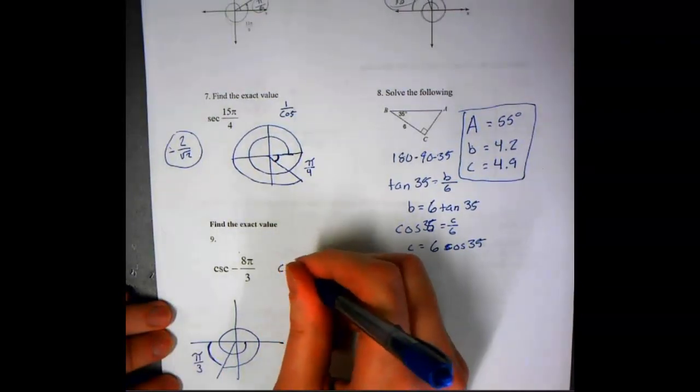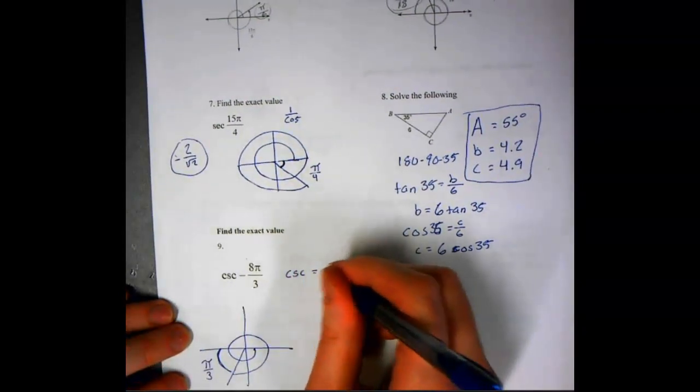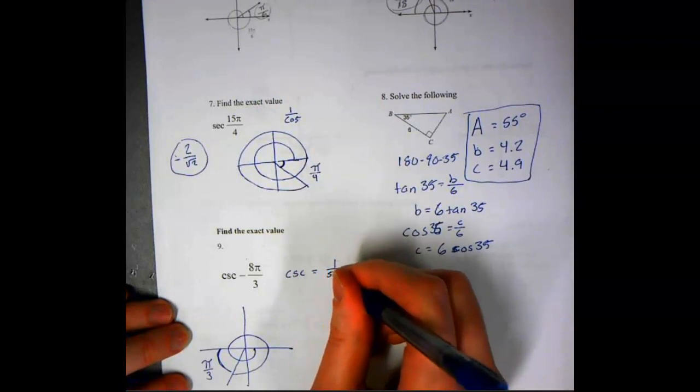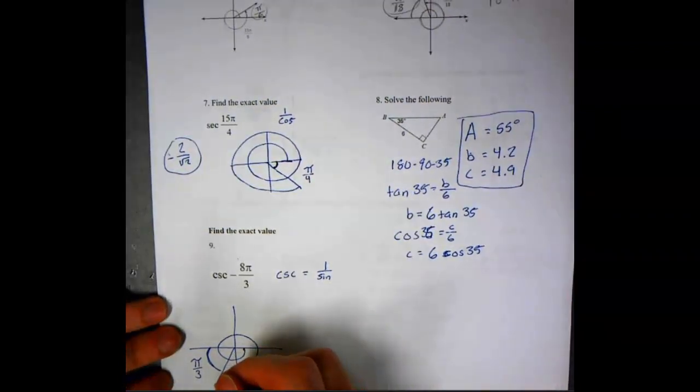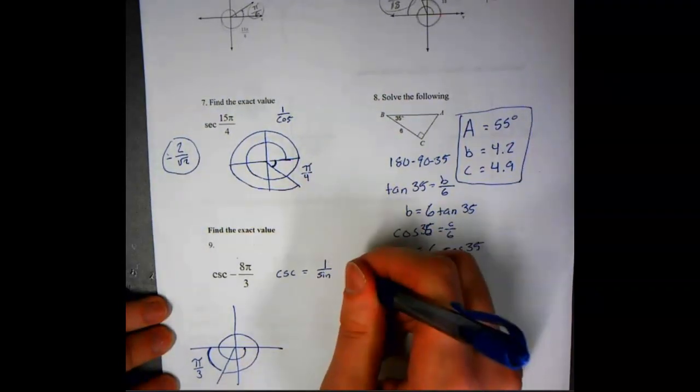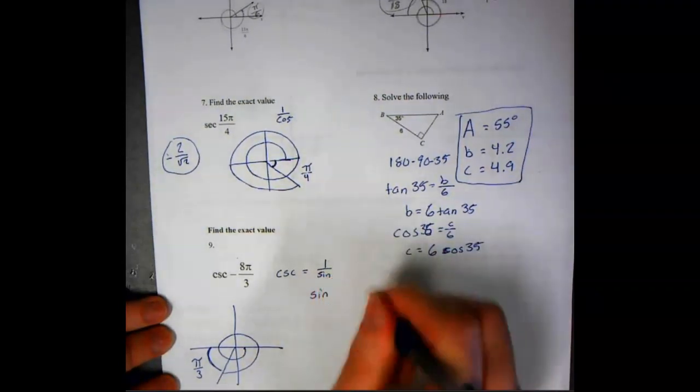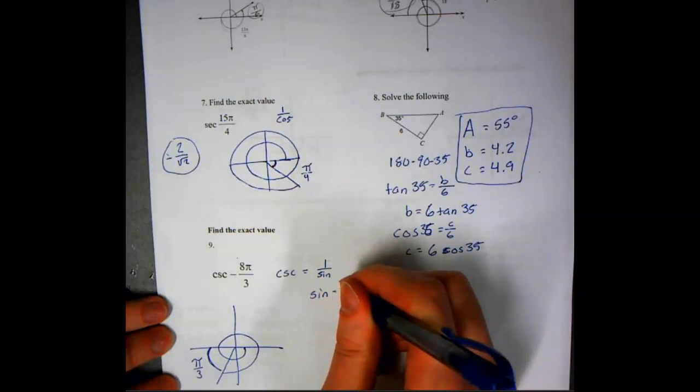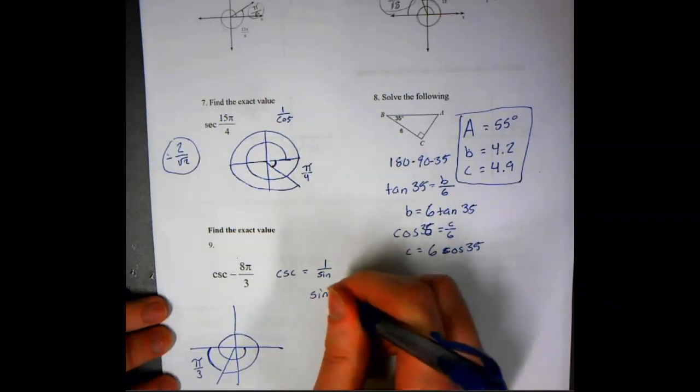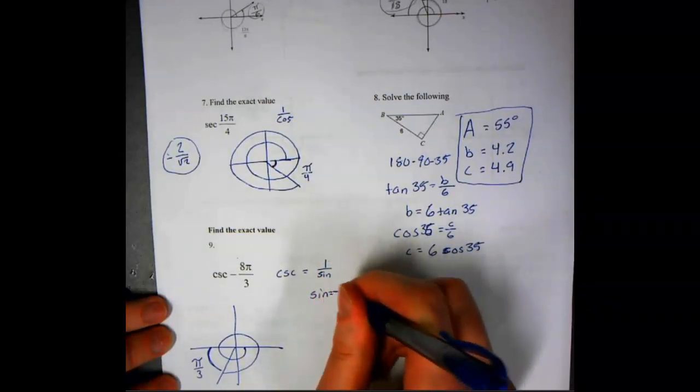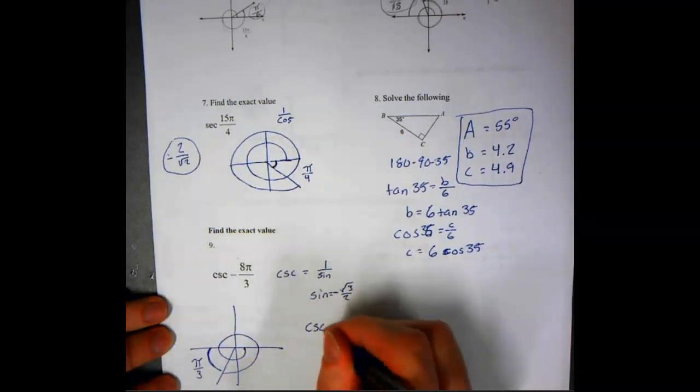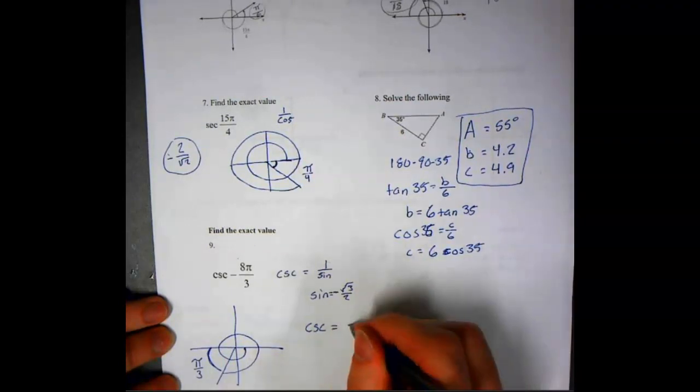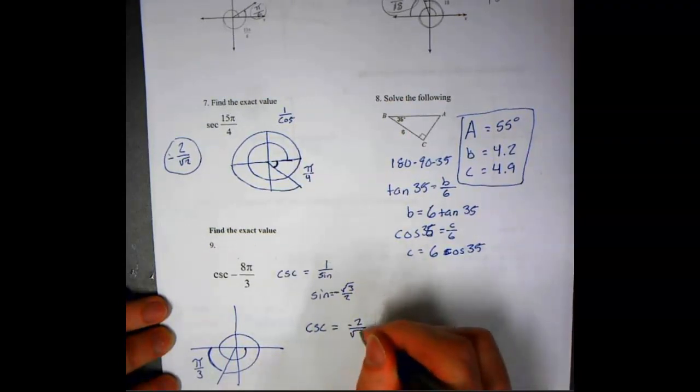And cosecant is the same as 1 over sine. So the sine would be the y coordinate for that, which is, so sine is that negative root 3 over 2. So this cosecant is going to be negative 2 over root 3.